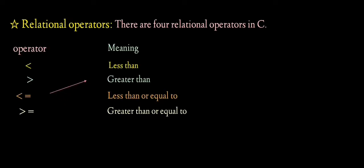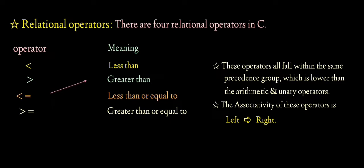Relational operators. There are four relational operators in C language: less than, greater than, less than or equal to, and greater than or equal to.